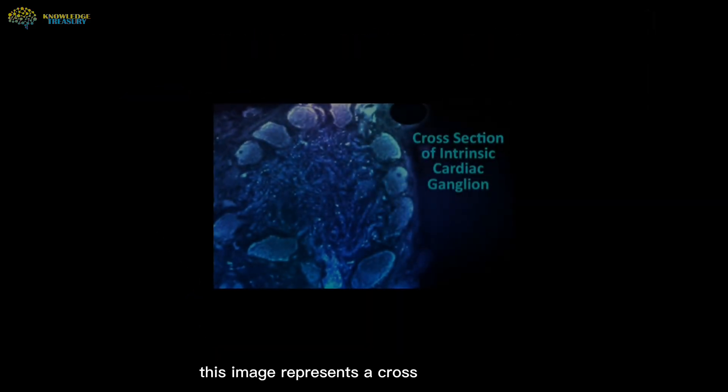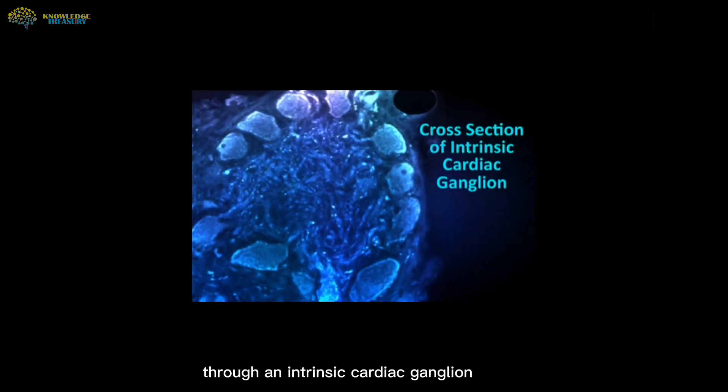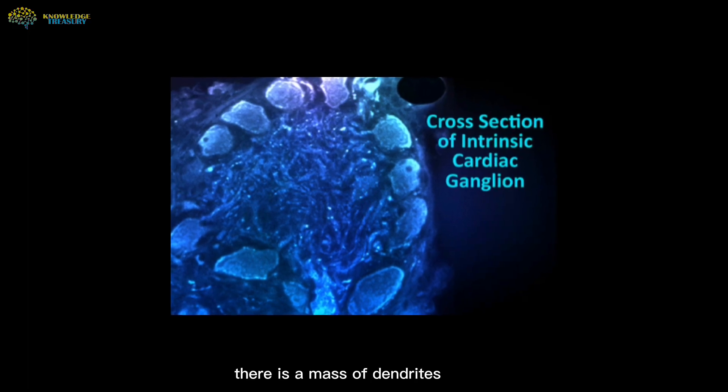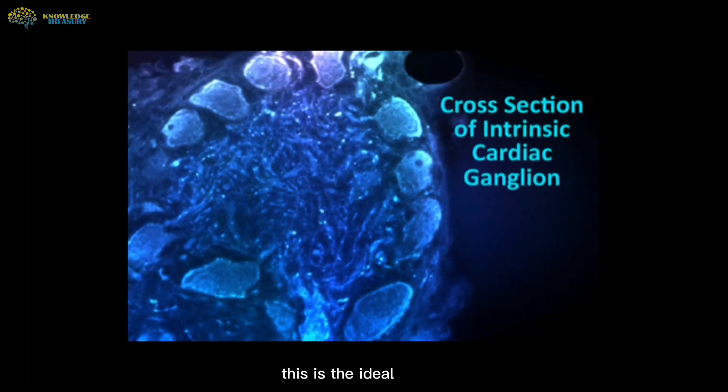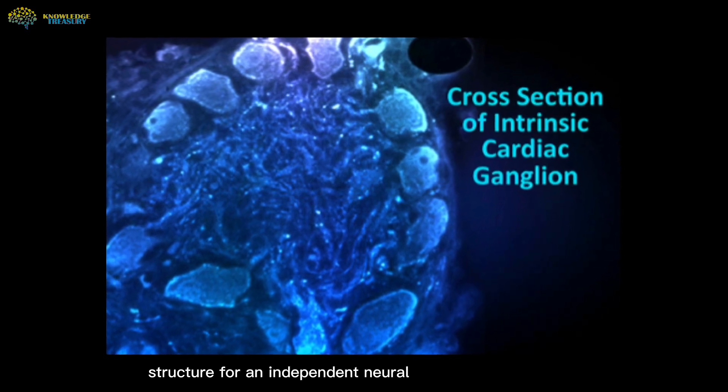This image represents a cross section through an intrinsic cardiac ganglion. In the centre there is a mass of dendrites which interconnect individual neurons. This is the ideal structure for an independent neural processing unit.